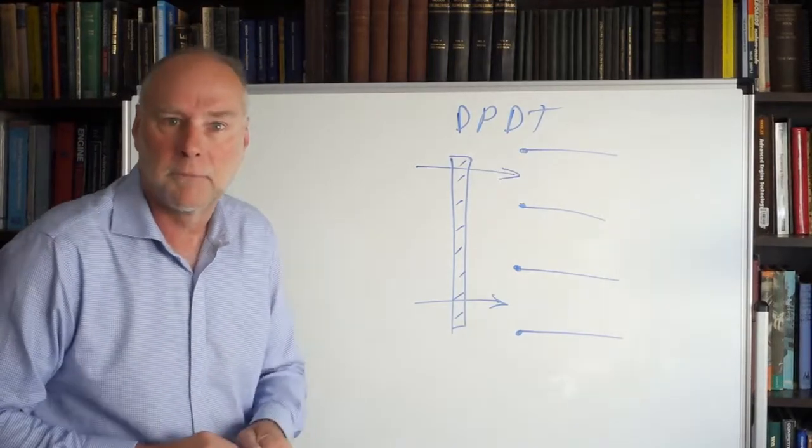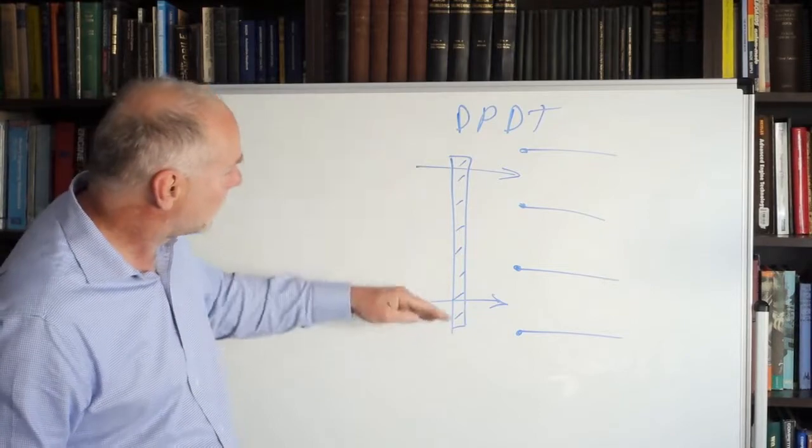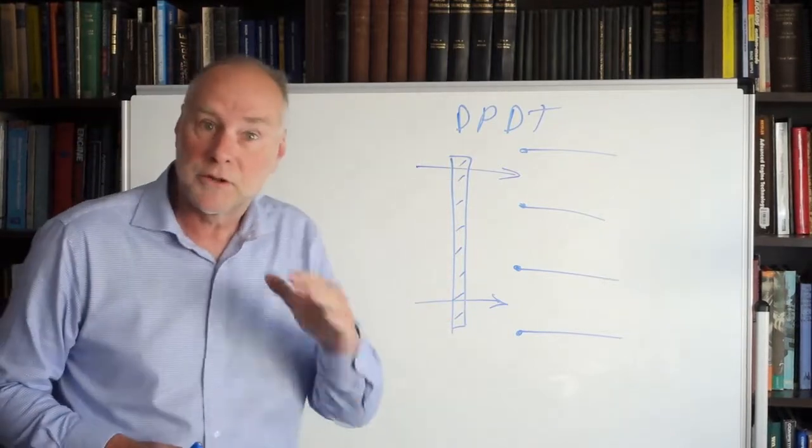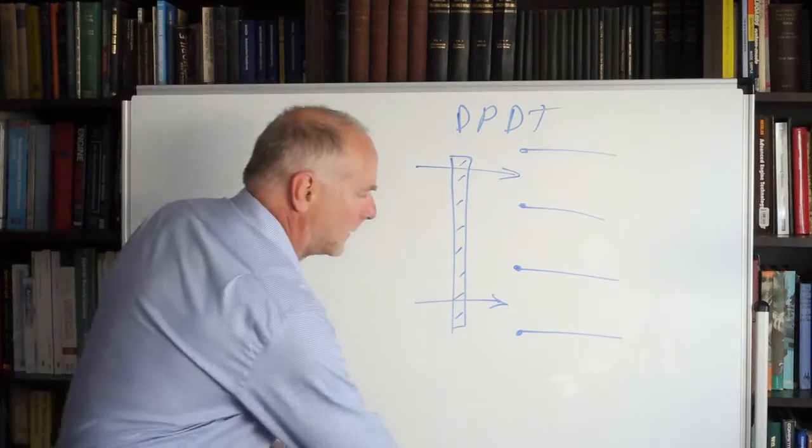Wow! We can do a lot by flicking the same toggle switch in two different directions can't we? The same switch lever controls two inputs which are able to be switched in two different outputs. Two different directions of output.